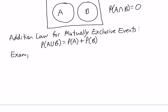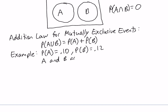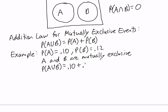Let's take a look at an example. Suppose the probability of A is 0.1 and the probability of B is 0.12, and A and B are mutually exclusive. That means to calculate the probability of A union B, we simply add the probability of A plus the probability of B: 0.1 plus 0.12, which is equal to 0.22.